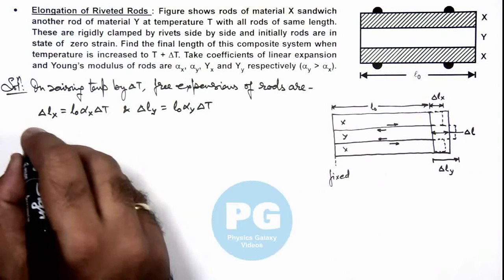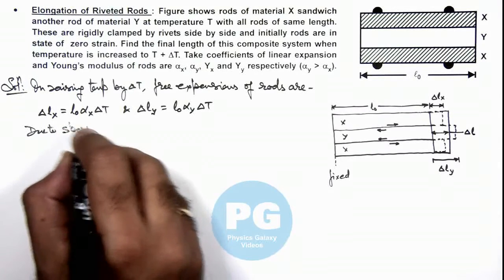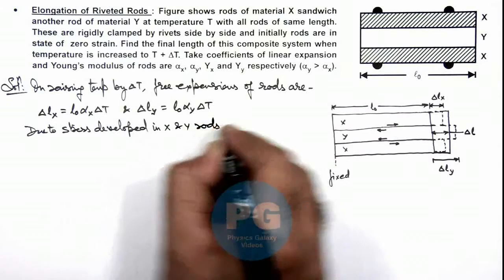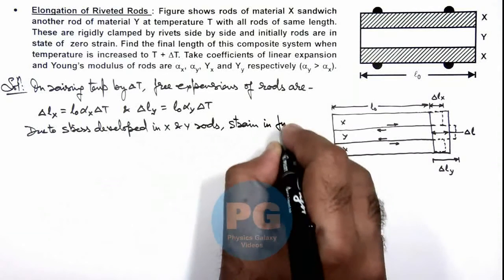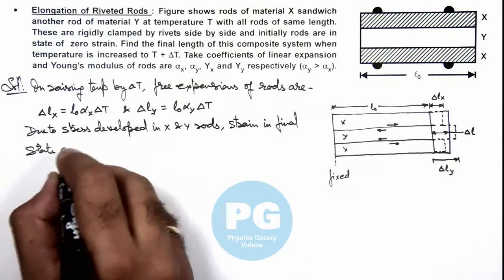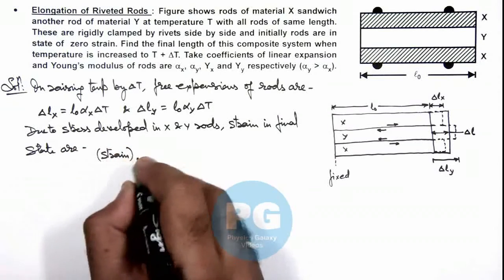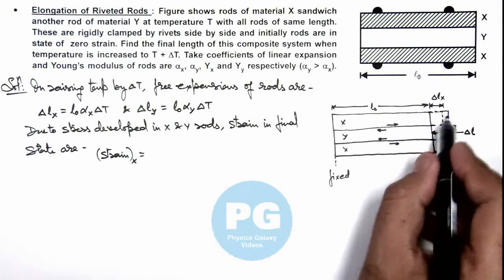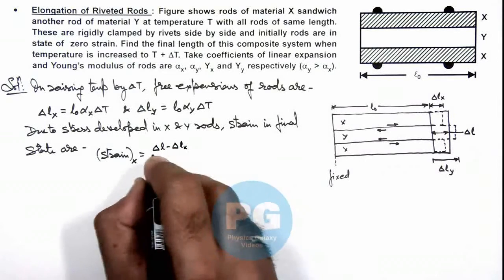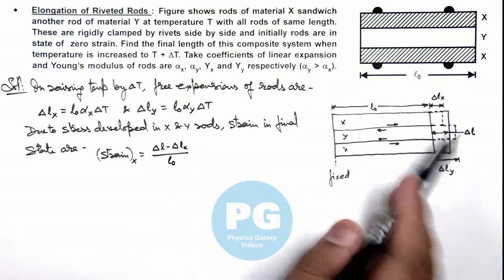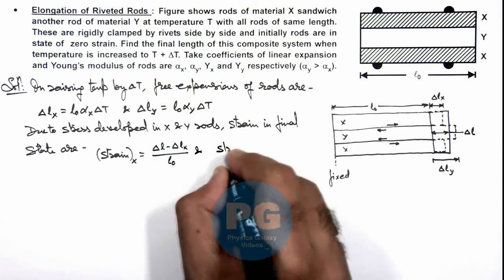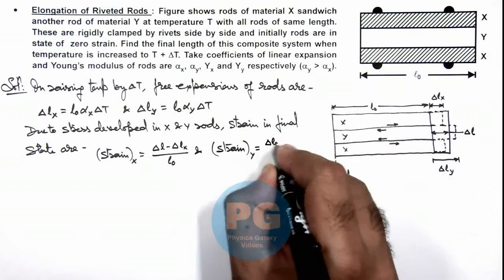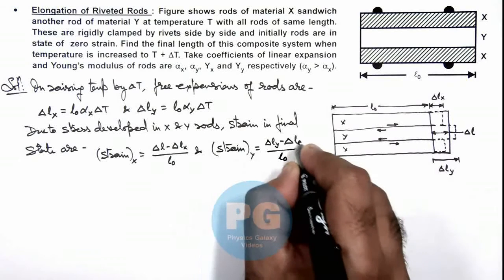Due to stress developed in X and Y rods, the strain in the final state can be written as: strain in X equals (delta L minus delta L_x) divided by L₀, since both elongations are very small compared to L₀. Similarly, the strain in rod Y equals (delta L_y minus delta L) divided by L₀.